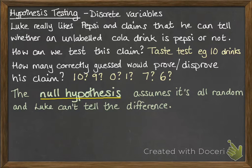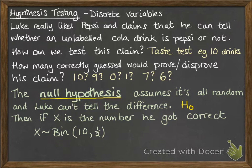This is what hypothesis testing is all about. The null hypothesis assumes that it's all random and Luke can't tell the difference — that it's down to chance and he's got a 50-50 chance of guessing whether the drink is Pepsi or not. So we're assuming he's wrong to begin with; the null hypothesis assumes it's just all down to chance. The null hypothesis is given the notation H with a subscript of 0. If it was all down to chance and X was the number he guessed correctly, it would follow a binomial distribution with 10 trials and a probability of success of one half — a 50-50 chance on each drink.